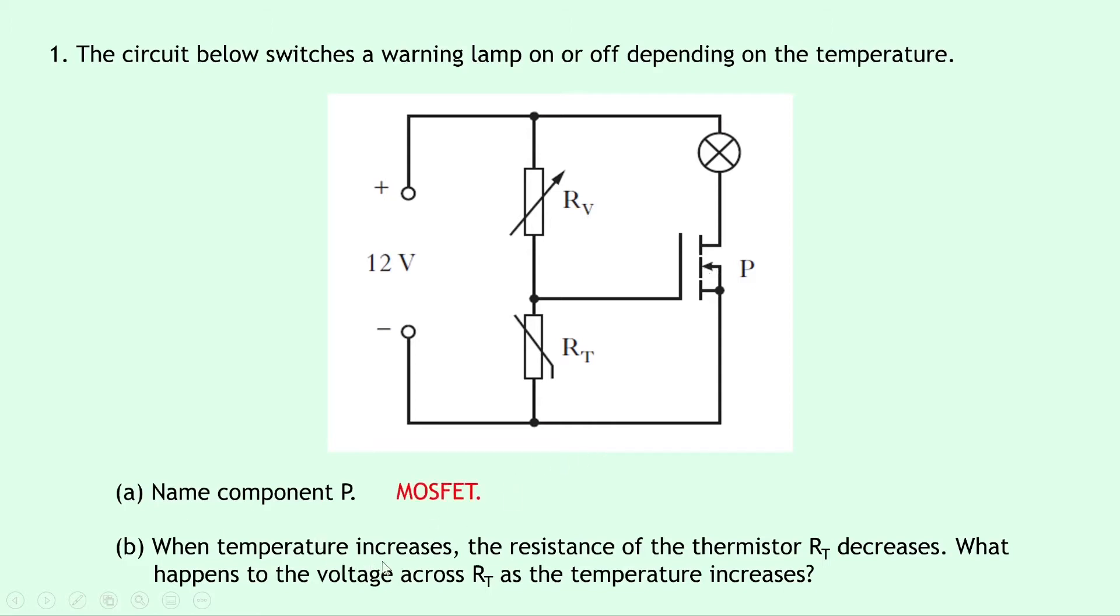Part B says when temperature increases, the resistance of the thermistor RT decreases. What happens to the voltage across RT as the temperature increases? Well, because the resistance of the thermistor decreases, then the voltage across it must decrease as well, so it decreases. Because remember, whatever happens to the resistance happens to the voltage.